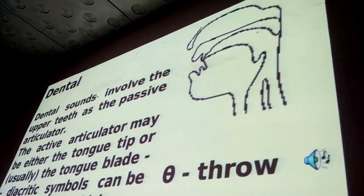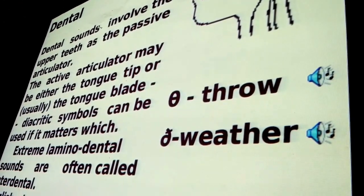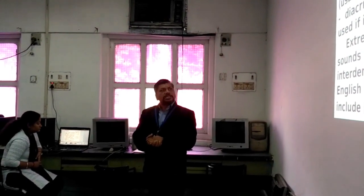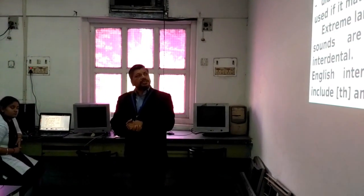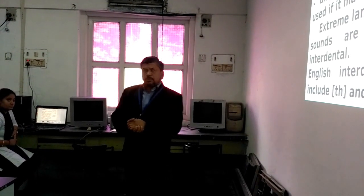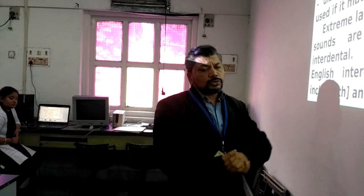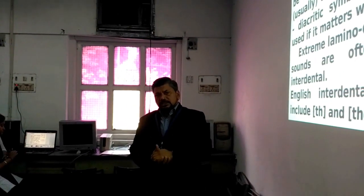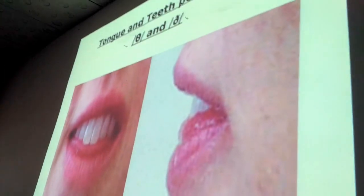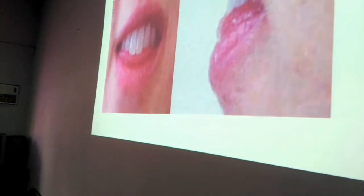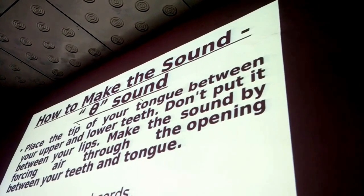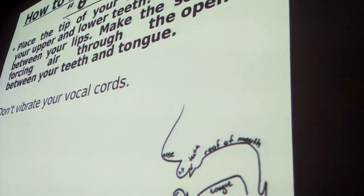Next category is dental. Dental sounds involve the upper teeth as the passive articulator. The active articulator may be either the tongue tip or the tongue blade. Diacritic symbols can be used. Dental sounds include TH as in throw and TH as in weather. Place the tip of your tongue between your upper and lower teeth like this.